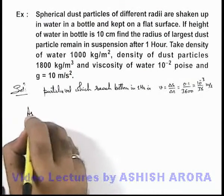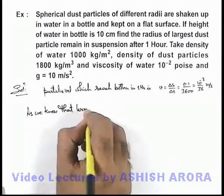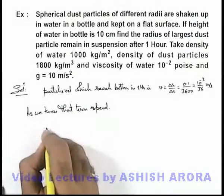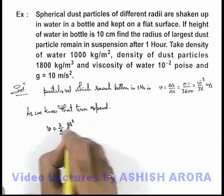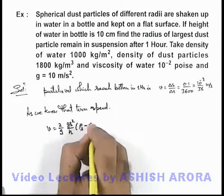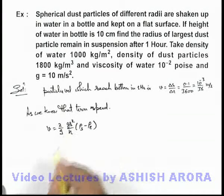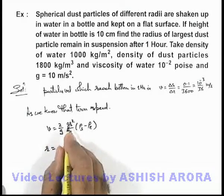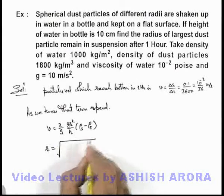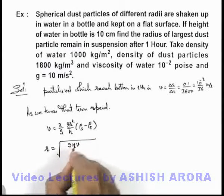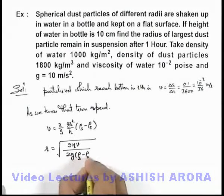As we know, the terminal speed is given by Stokes' rule as: v = (2/9) × (g × r²/ η) × (ρ_solid − ρ_liquid). From this expression, the radius of those particles having speed equal to or less than our critical value can be obtained as: r = square root of [9ηv / (2g(ρ_s − ρ_l))].